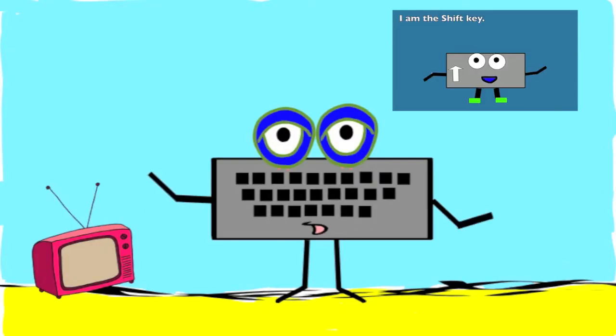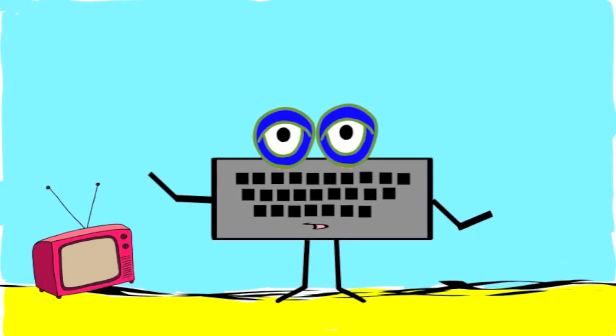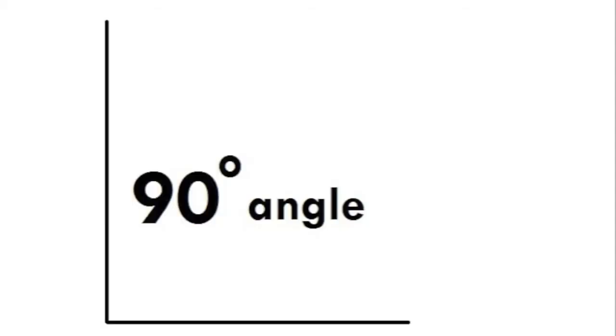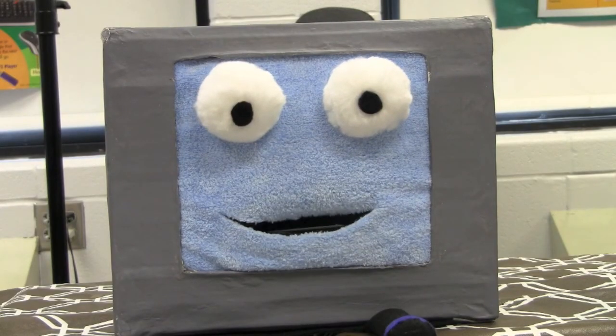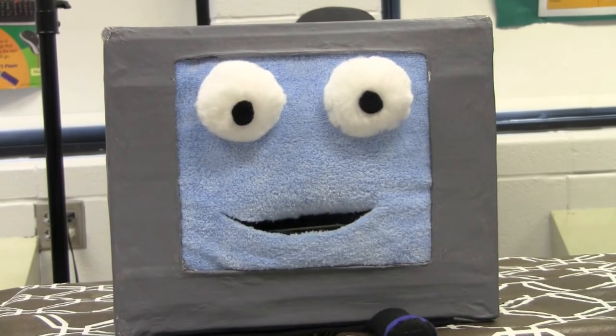Press the SHIFT key while using the Polygon tool to make your lines perfect 45 degree or 90 degree angles. Pressing the SHIFT key while using the Polygon tool can make your lines neater. It sure will! Plus the SHIFT key works well with other shape tools in Paint!